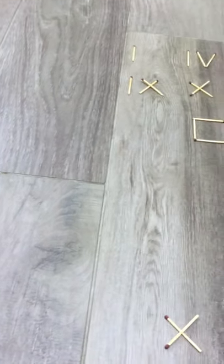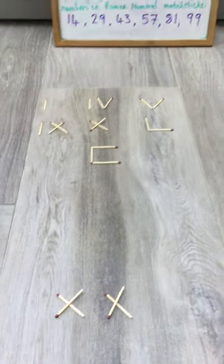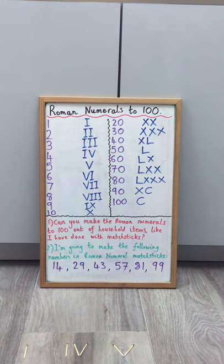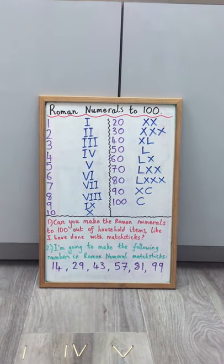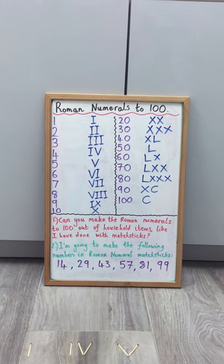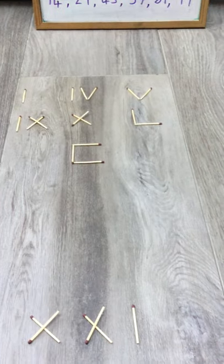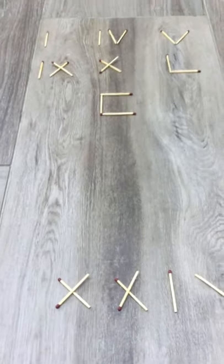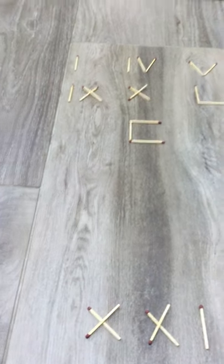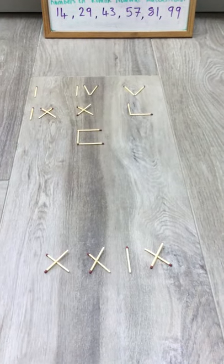There's another ten so that's my 20 and I've also got to remember my nine because it's 29 and nine as we can see is made up of our I and our X. So there's my I and I need one more X. There we go, 29.